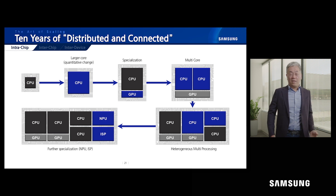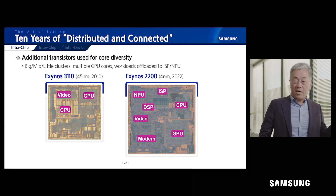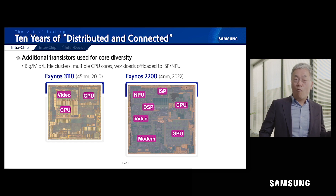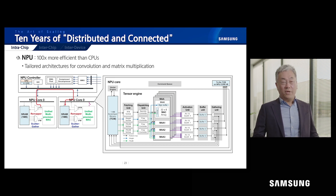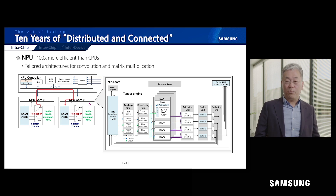Then what would be the next decade? Let's look at the die photos drawn at the same scale. Left is 45 nanometer, right is 4 nanometer. The cell size shrunk 100 times. However, an interesting fact is that the chip size is pretty much similar — I'll let you tease your brain as to why chip sizes are similar after 10 years. Let's do a case study: NPU, the neural processing unit, which is 100 times — probably 1000 times — more efficient than CPU on certain tasks like matrix multiplication and tensor multiplication. This picture depicts Samsung's NPU architecture.